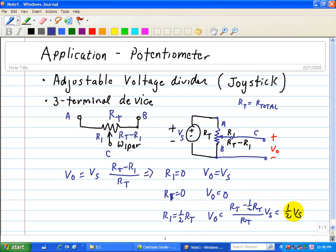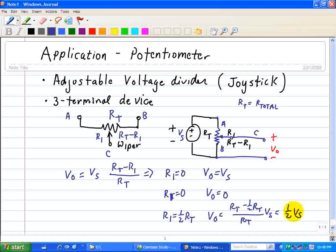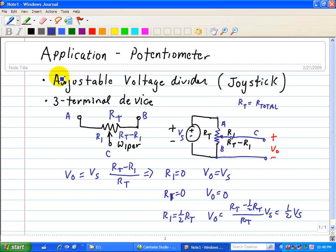So hopefully this application shows you what a potentiometer does, and we can think of it as an adjustable voltage divider. It can go from 0 to whatever the power supply voltage is, and that's how this three-terminal device works.